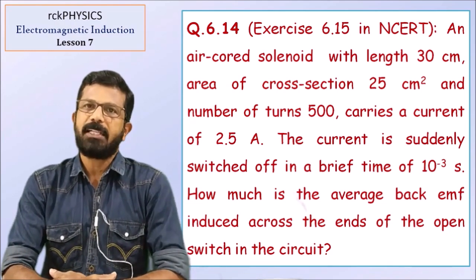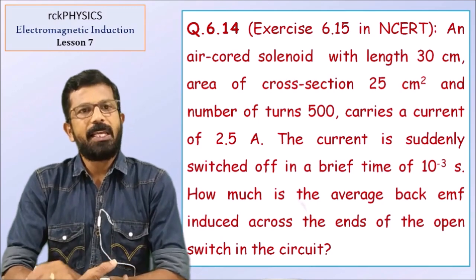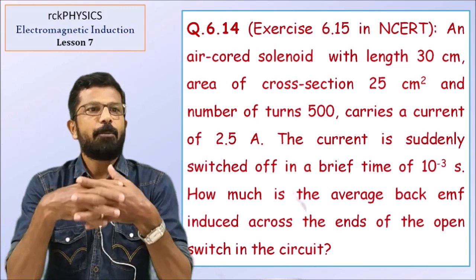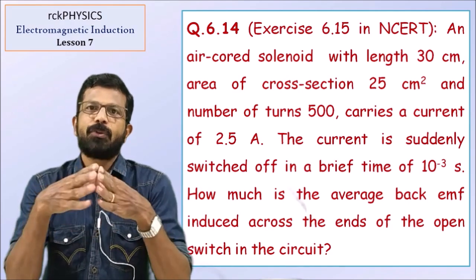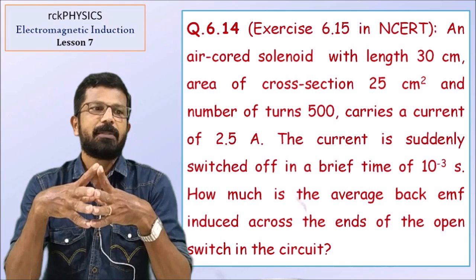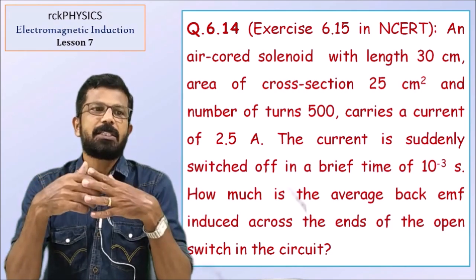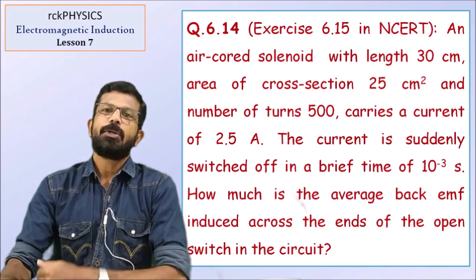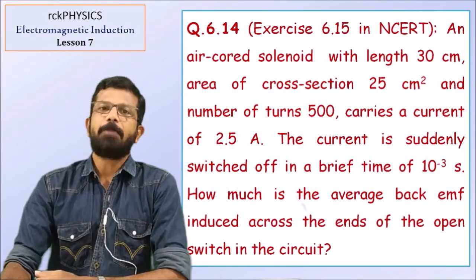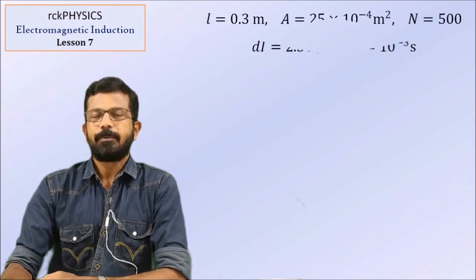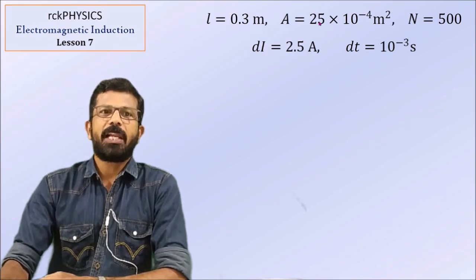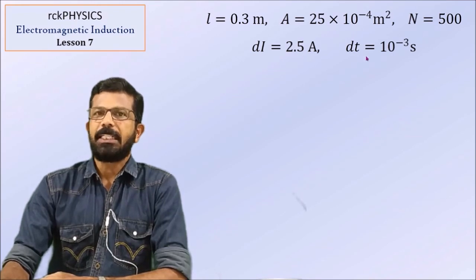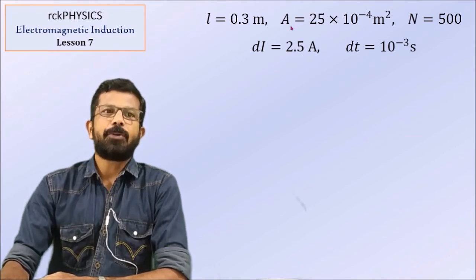Given: length of the solenoid is 30 cm, cross-sectional area is 25 cm², number of turns is 500, and the solenoid carries a current of 2.5 ampere. The current decreases to 0 over a time interval of 10 raised to minus 3 second. Change in current Di is 2.5 ampere, Dt is 10 raised to minus 3 second. Cross-sectional area 25 cm² is converted to 25 into 10 raised to minus 4 m².